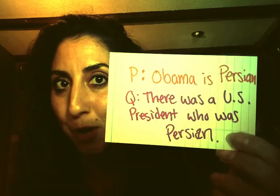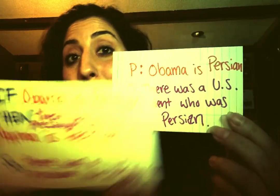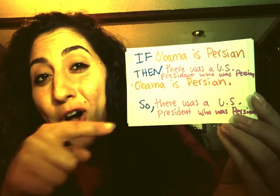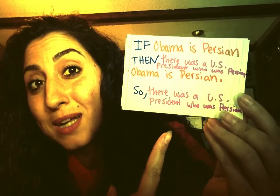You've got to be really careful, though, because if you mistakenly assume that Obama is Persian and follow a modus ponens, for example, you would have a valid argument that there was a Persian president of the United States. You can be perfectly reasonable and correctly follow all the rules of reasoning brought to us by logic and still be wrong. Logic does not guarantee the truth. You can be logical and wrong.